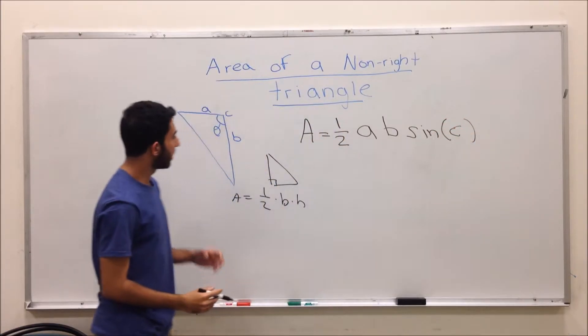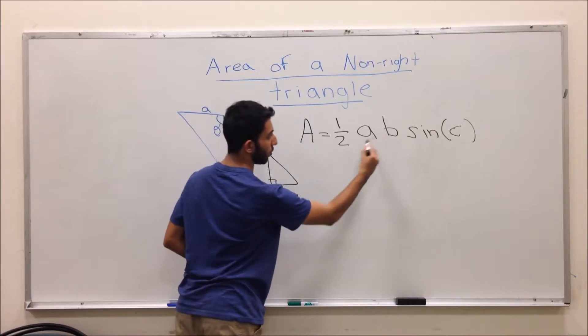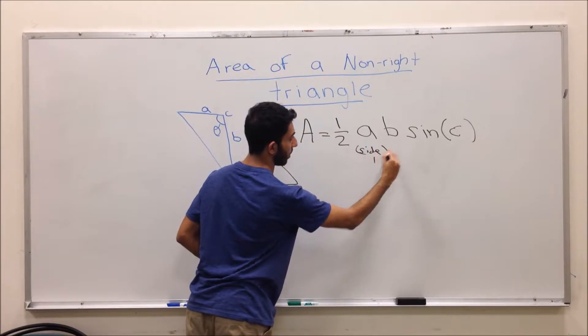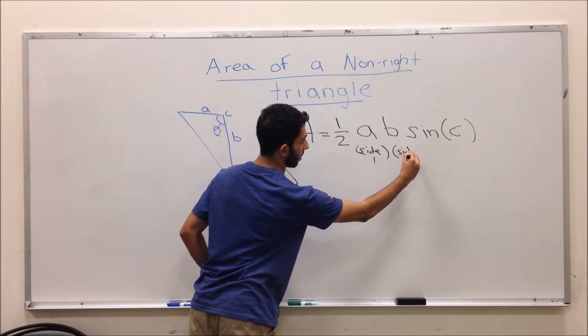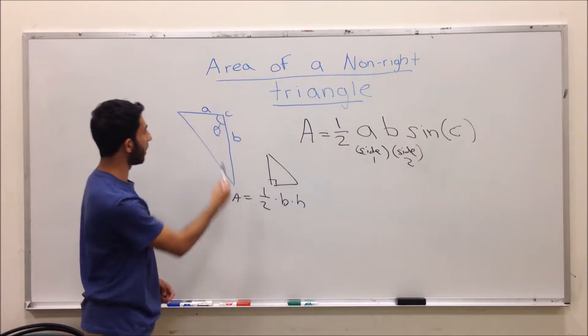Here, when you examine this triangle, you have to keep in mind that you must use two sides, so the a and the b will be sides, side 1, side 2. And the sine of c will be a corresponding angle.